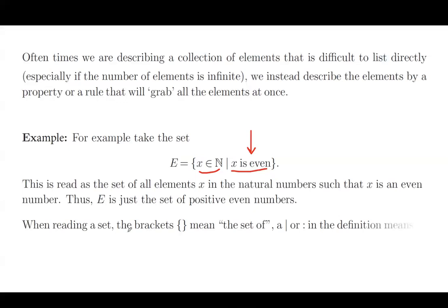When reading a set, the brackets mean 'the set of.' When you're writing this vertical line, it is read as 'such that.' It's basically saying: we have the set of all elements that are in N such that x is even.